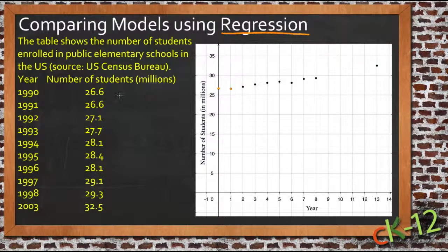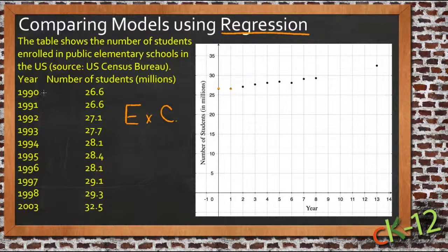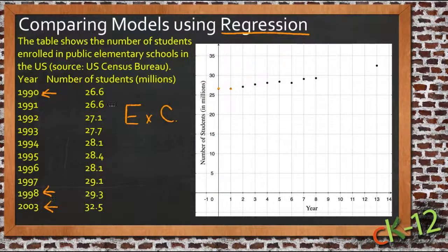What I'm going to do is take some data from example C in your text here, and use it as background as we're discussing the topic. In example C, there's a table that shows the numbers of millions of students enrolled in US elementary schools in the given list of years, starting in 1990, running through to 1998, and then jumping to 2003.